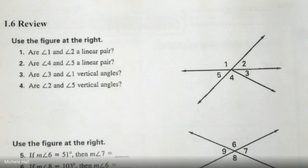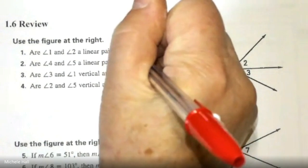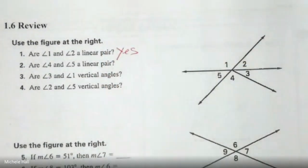Are Angles 1 and 2 a linear pair? Yes, they make up a line. Are Angles 4 and 5 a linear pair? Do Angles 4 and 5 make up a line? No, they do not.